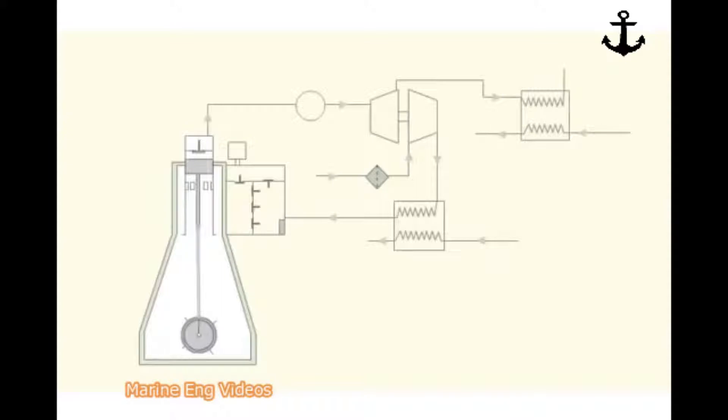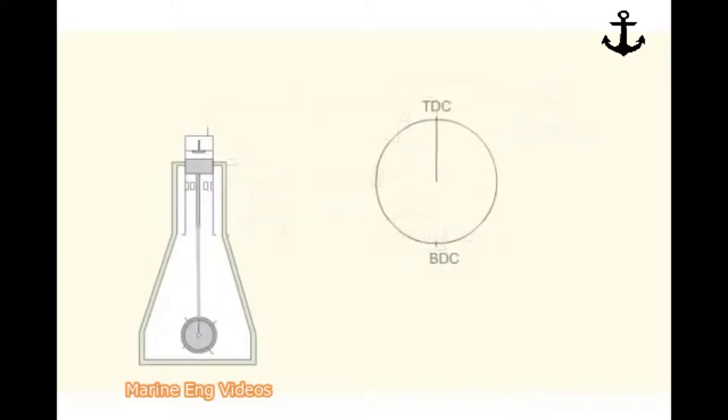The sketch shows Sulser RTA series engine scavenging system. The piston is shown at top dead center. During the downward stroke of the piston, when the crank is about 95 degrees past the top dead center, the exhaust valve begins to open.